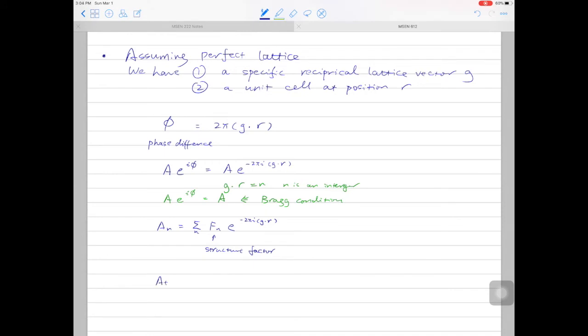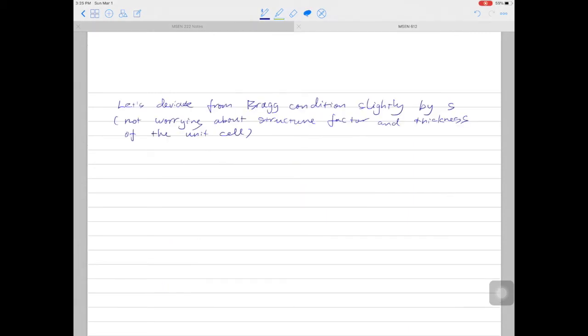We can also rewrite it as an integral. So At, in this case t is the thickness, is equal to f over a, integrating from minus half t to half t, then exponential minus 2πi g·r dr. A here is the size of the unit cell, or lattice parameter.